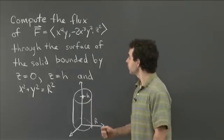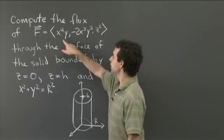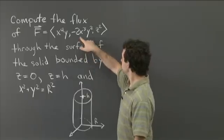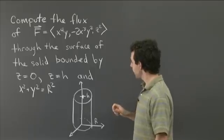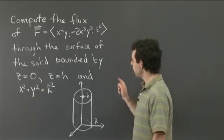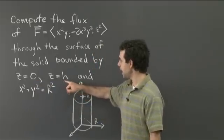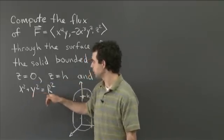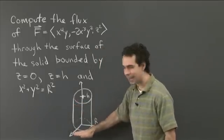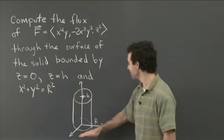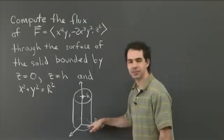So I've got this field F. Its coordinates are x to the fourth y minus 2x cubed y squared, and z squared. And it's passing through the surface of a solid that's bounded by the plane z equals 0, by the plane z equals h, and by the surface x squared plus y squared equals r squared. So we often call this solid a cylinder. It's got its bottom surface in the plane z equals 0, its top surface in the plane z equals h, and a circular base with radius r.